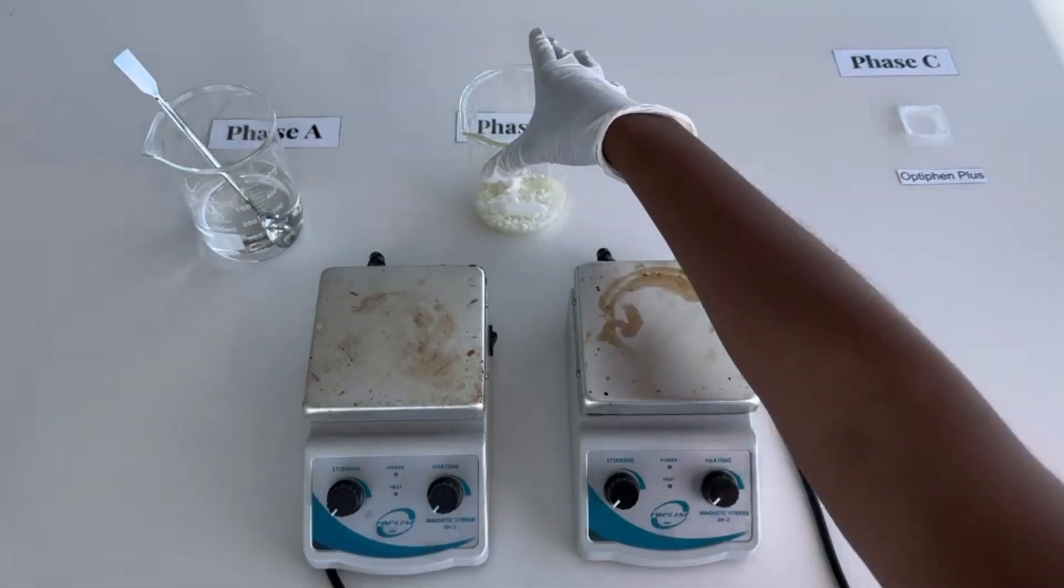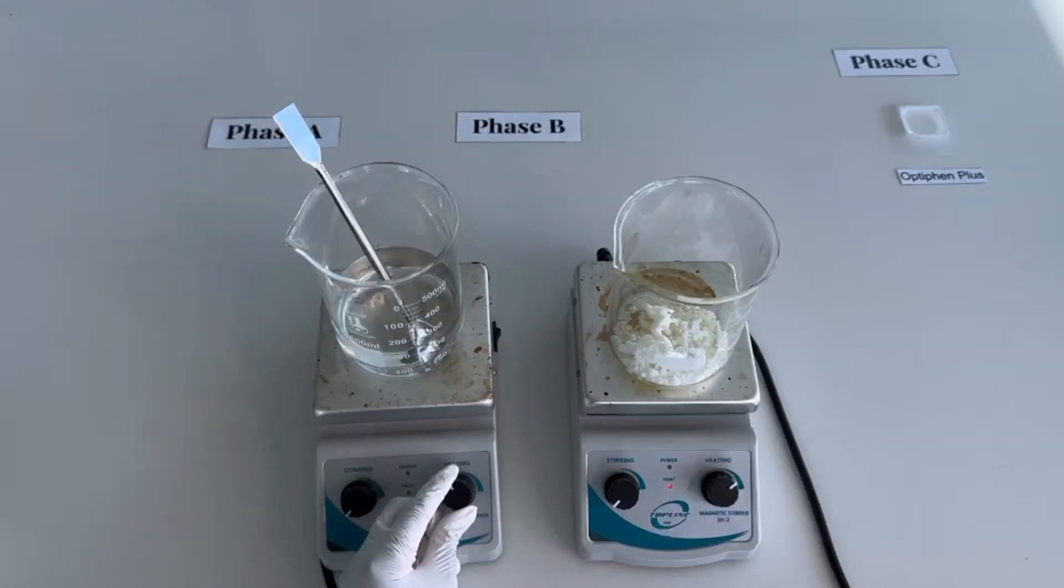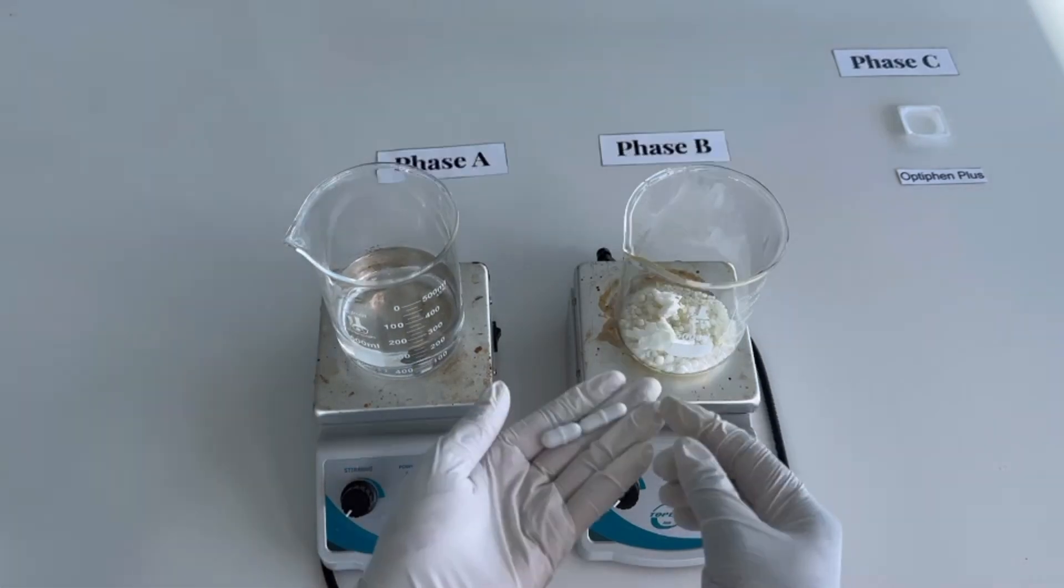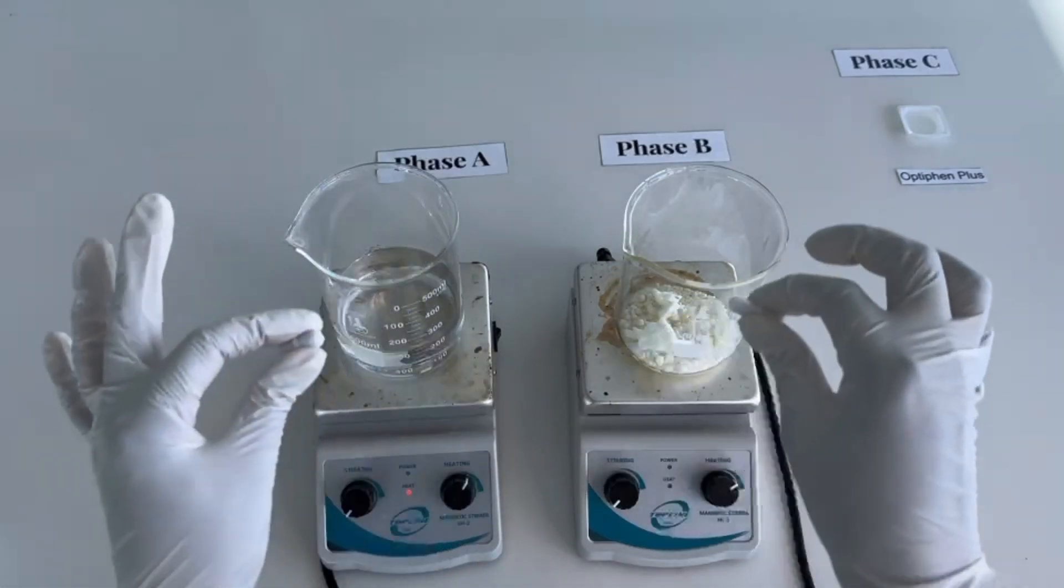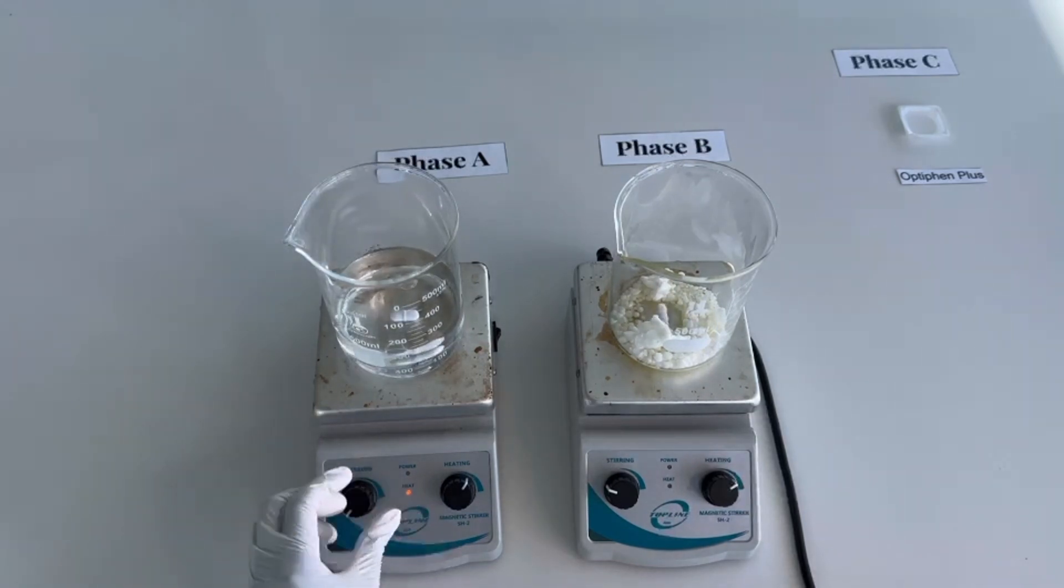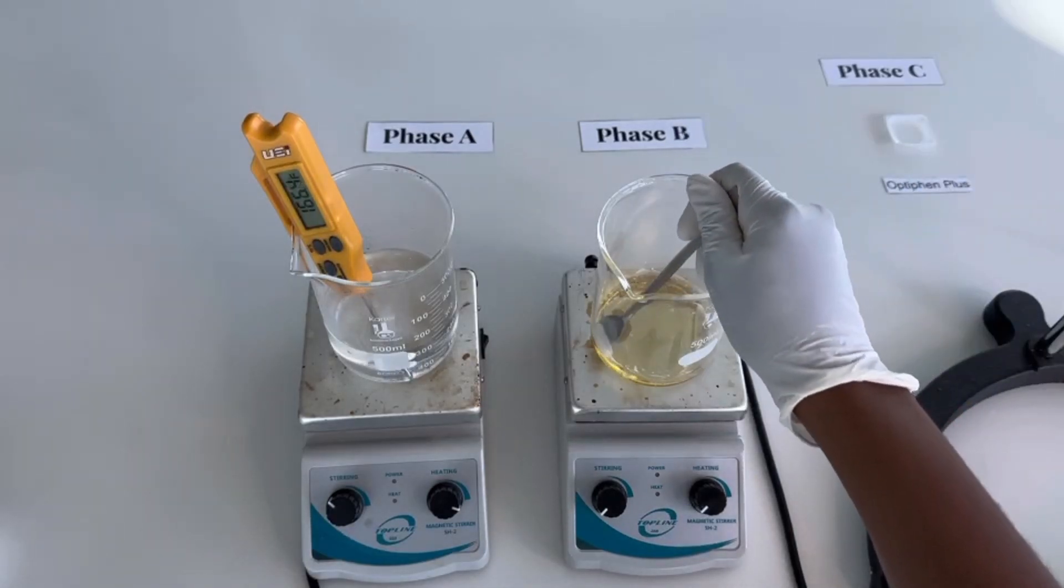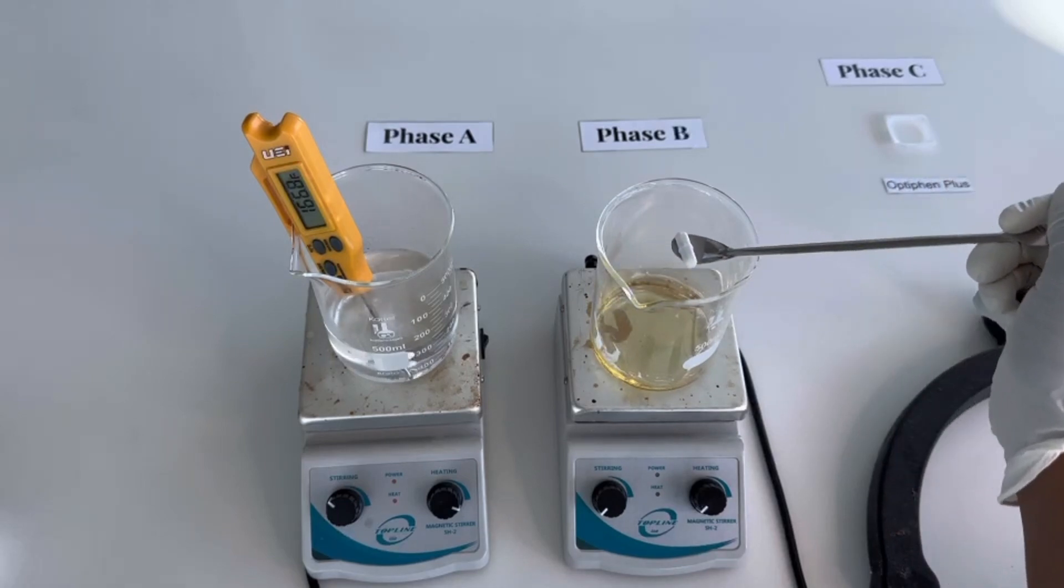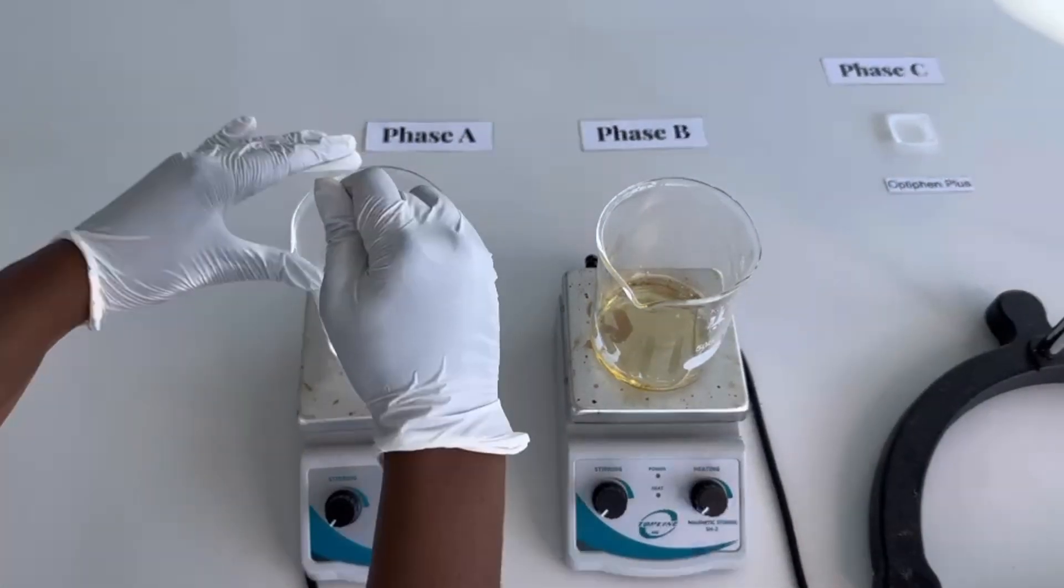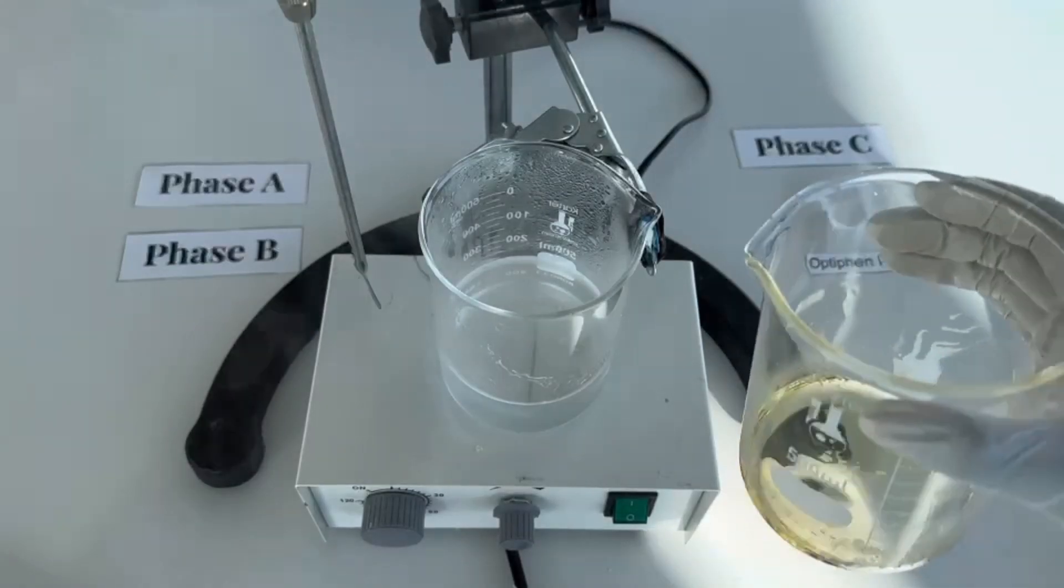Now that Phase A and Phase B are completed, I'll add them both to a heat source. I added stir bars to Phase A and Phase B so that the ingredients are thoroughly combined and they don't burn. If you're concerned about accidentally burning Phase B, you could also use a double boiling method. We're going to heat both of these over 170 degrees.